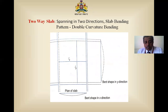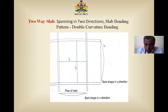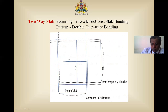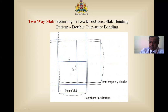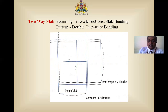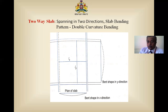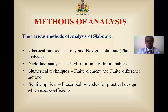Slabs spanning in two directions — meaning the slab bending pattern exists in both the shorter span and longer span directions — are designed as two-way slabs. Reinforcement along the shorter span LX and along the longer span LY must both be designed as per IS456 criteria. This is called a double curvature or spherical curvature slab — a two-way slab.